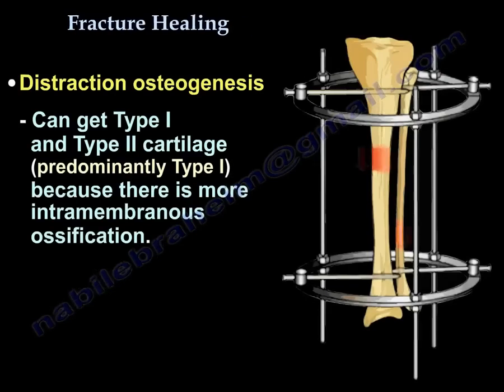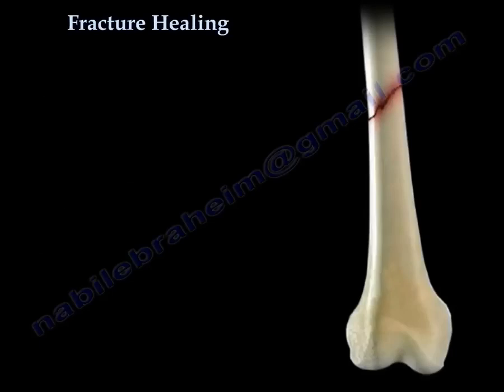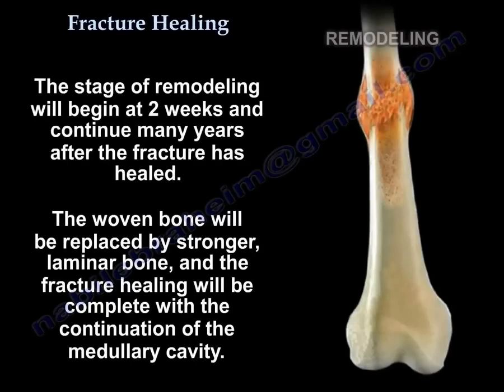In distraction osteogenesis, you can get type 1 and type 2 collagen, predominantly type 1 because there is more intramembranous ossification. The stage of remodeling begins at 2 weeks and continues many years after the fracture has healed. The woven bone will be replaced by stronger lamellar bone.